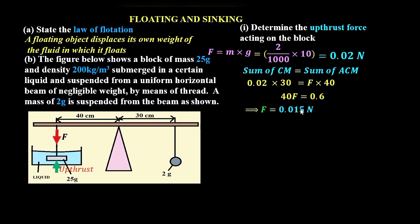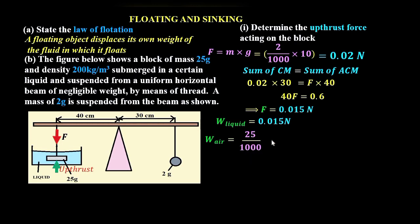This force F is the apparent weight of the block, so the weight of the block in the liquid is 0.015 newtons. To find the upthrust, we also need the weight of the block in air: mass is 25 grams, converted to 0.025 kilograms, times gravitational field strength of 10, giving 0.25 newtons.